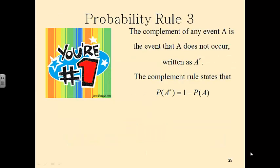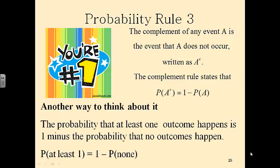Probability rule number three: the complement. The complement of any event A is the event that A does not occur, and is written as A with a little c up there. The complement rule states that the probability of the complement of A is simply one minus the probability of A. This is a very handy rule — it's going to save you lots of work. Another way to think about it: the probability that at least one outcome happens equals one minus the probability that no outcomes happen.